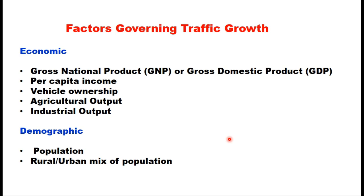The different factors which govern the traffic growth in an area or region are mainly two: economic factors and demographic factors. Economic factors include gross national product (GNP or GDP), per capita income of the people, vehicle ownership, and agricultural or industrial output. Whereas demographic factors are population and the rural and urban mix of population in the area.